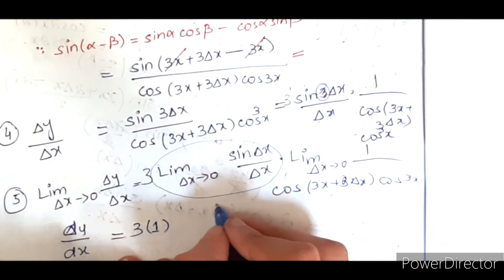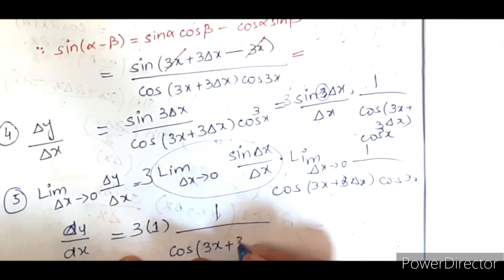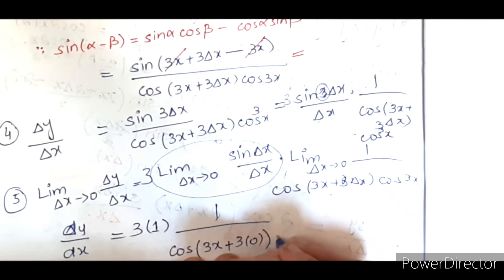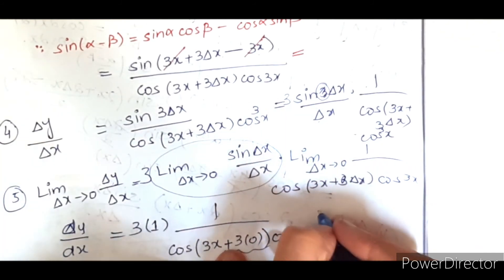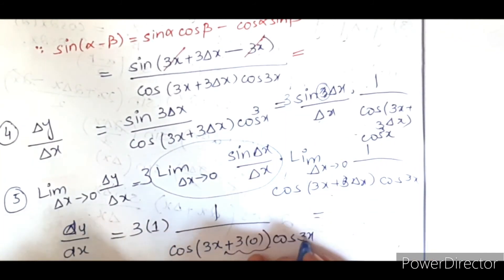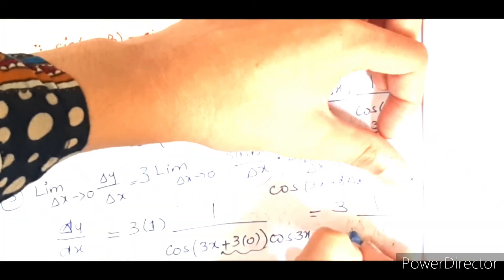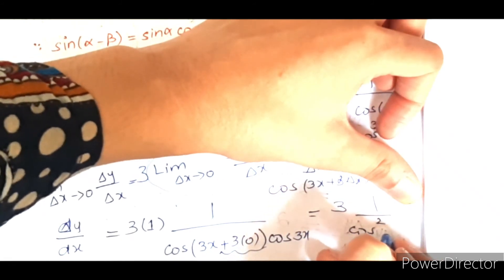And if we apply limit here, it will be 1 over cos 3x plus 3 into 0, because del x approaches to 0, into cos 3x. So this term is 0. So we have cos 3x into cos 3x, which will be 3 times 1 over cos square 3x.